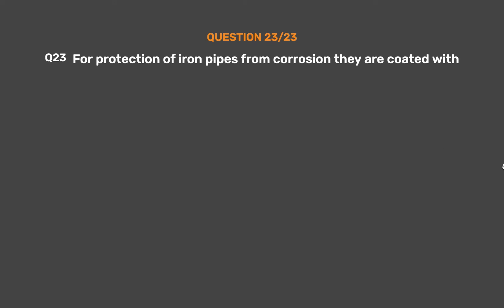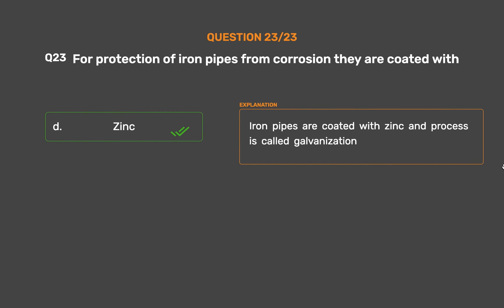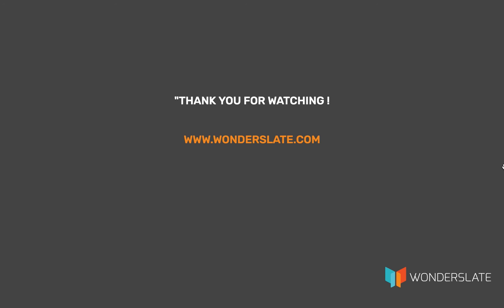Question number 23. For protection of iron pipes from corrosion, they are coated with — Option A: Silver. Option B: Copper. Option C: Aluminum. Option D: Zinc. The correct answer is Option D: Zinc. Iron pipes are coated with zinc and the process is called galvanization.